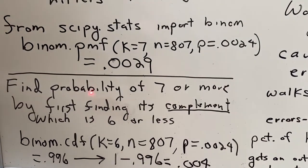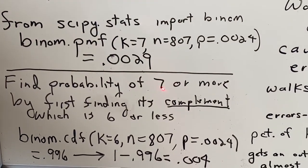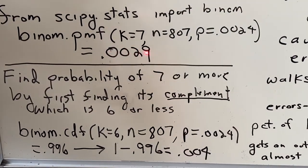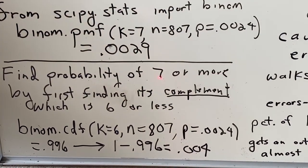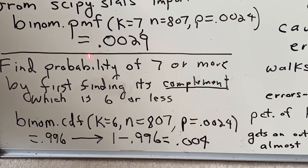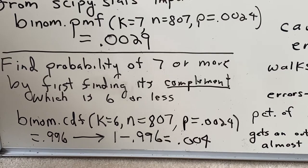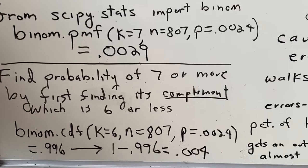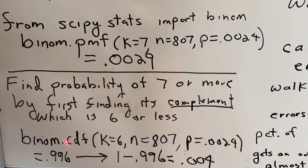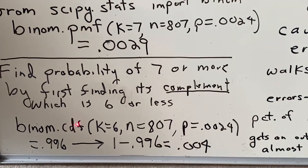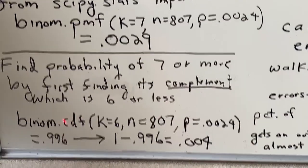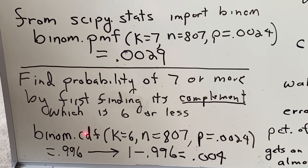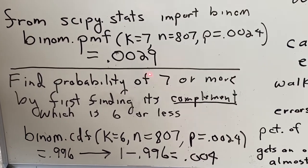And so, we're going to ask, what's the probability of getting 7 or more? That's a little bit more than the probability of getting 7. Here's the probability of getting exactly 7. The probability of getting 7 or more is going to be a little bit more than that. But the way we're going to go about it is by the use of a complement. Instead of finding the probability of 7 or more, we're going to find the probability of 6 or less.